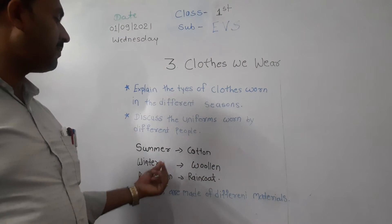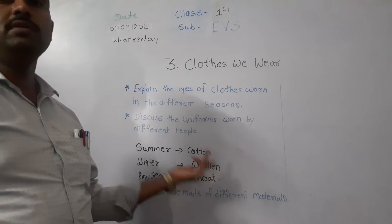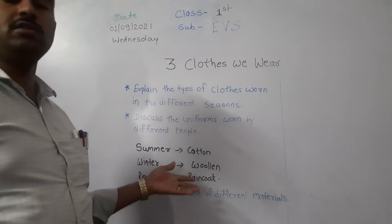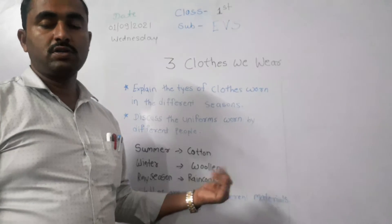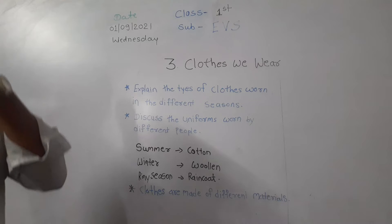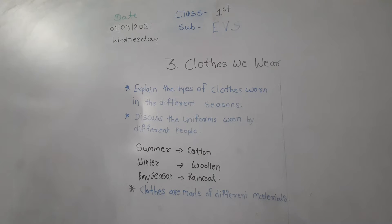In the rainy season, a raincoat and umbrella are used to protect our body from rain. We also have gum boots in the rainy season. They keep us dry, and we use the umbrella to protect ourselves from the rain.